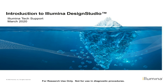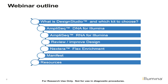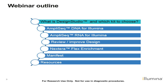Today, our webinar outline will be the following. We are going to describe first what is Design Studio and what key to choose. We are then going to go into more detail on AmpliSeq DNA for Illumina, and then AmpliSeq RNA for Illumina. After that, we are going to review a couple of tricks to improve our design. Next, we are going to switch gears with Nextera Flex for Enrichment custom design. And finally, we are going to explain what the manifest is before showing a couple of resources. Let's get started.